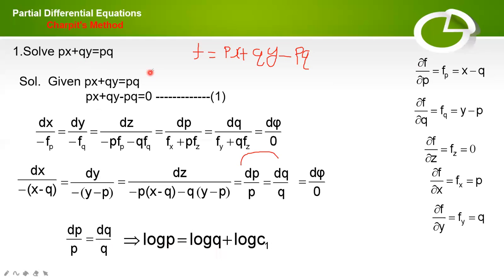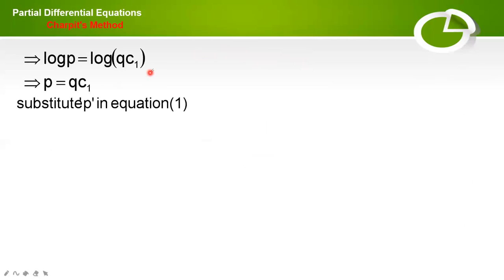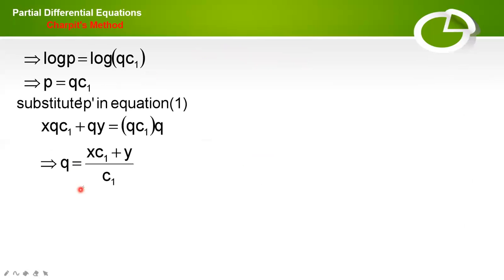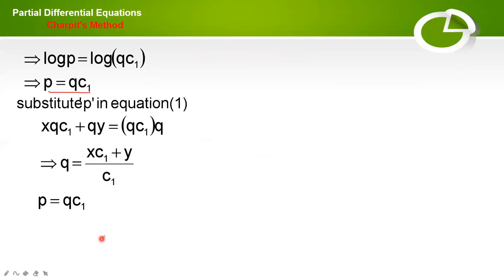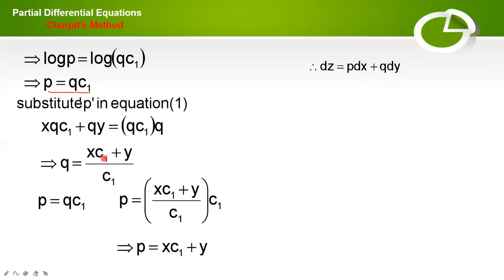Now substitute p equal to qc in the original equation and find the value of q. Therefore, q equal to xc plus y divided by c1. Now substitute this q back to get the value of p. Cancel the common terms. Therefore, p equal to xc1 plus y. Substitute the values of p and q: p is xc1 plus y, and q is xc1 plus y divided by c1.